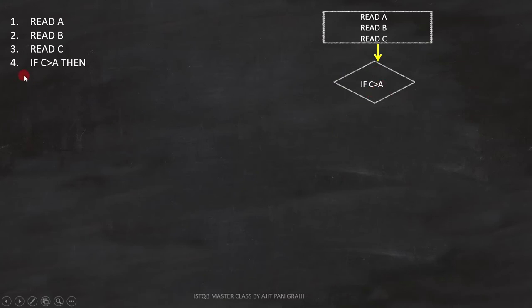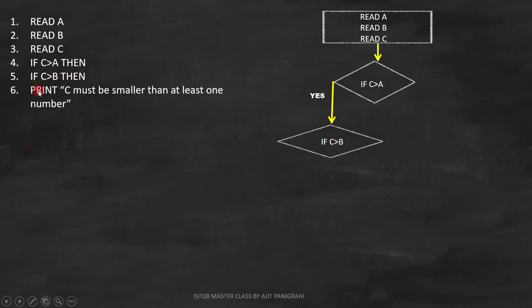Now, if this condition becomes true, line number 5, if C is greater than B will execute. This is also a condition, so we can represent it like this on the flowchart. If this condition becomes true, line number 6, print C must be smaller than at least one number will execute.